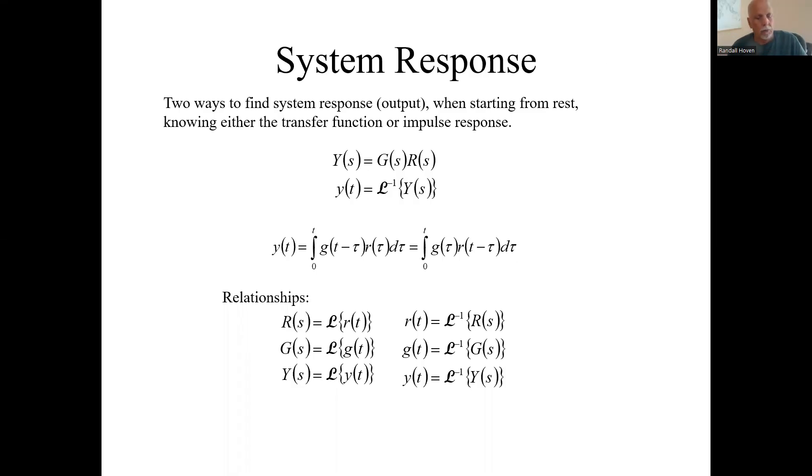In the previous video, I said there's a couple of ways to find the output of a system. One is using Laplace, the other way is using convolution. I should have mentioned that these two are equivalent because convolution is commutative, just like this multiplication is commutative.